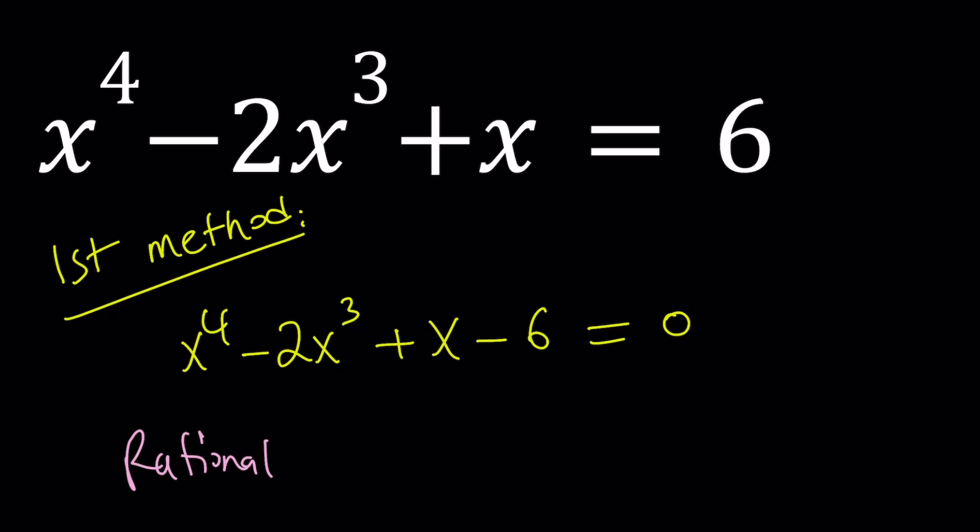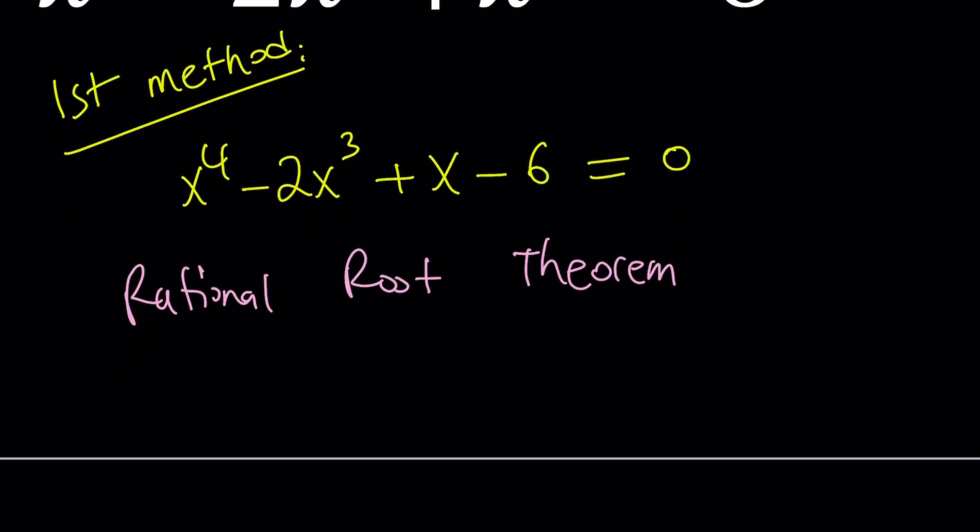The rational root theorem is actually really cool. It tells us if there are rational roots, then they have to divide the constant term. What numbers divide 6? Well, plus minus 1, plus minus 2, plus minus 3, and plus minus 6. There aren't that many candidates. So you only have to test 8 numbers.